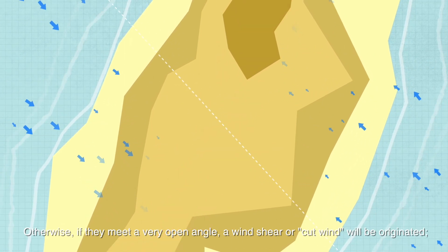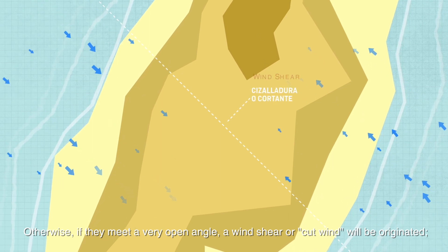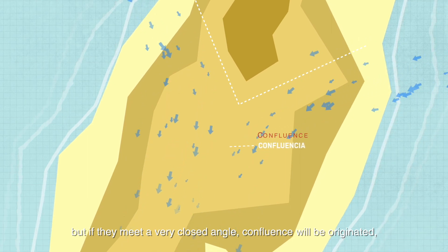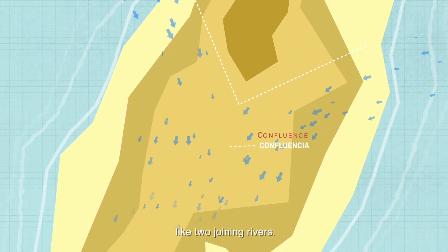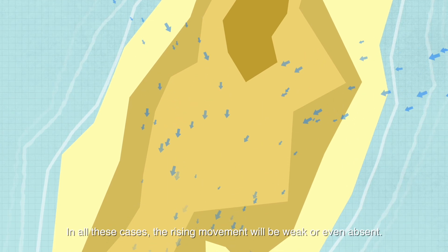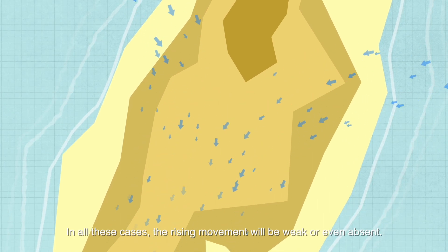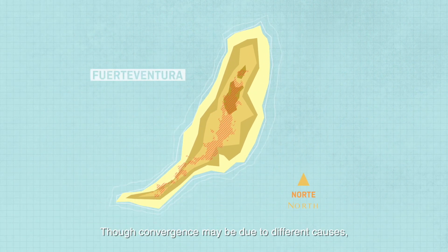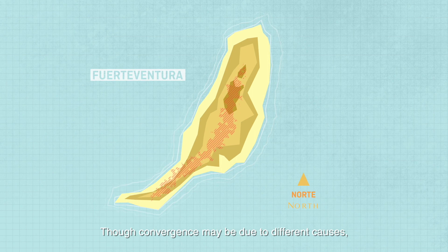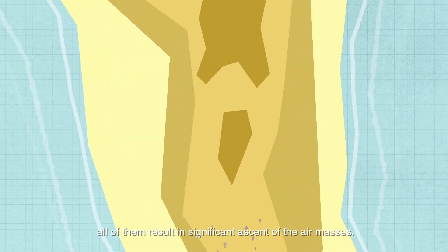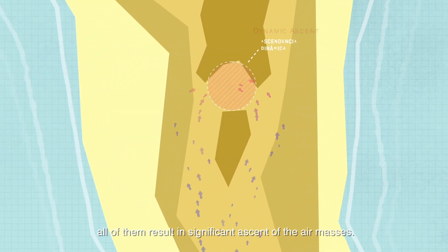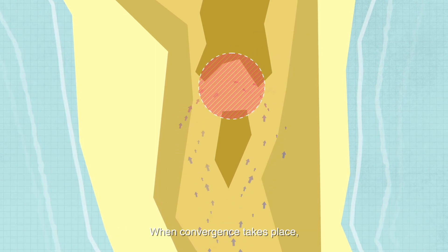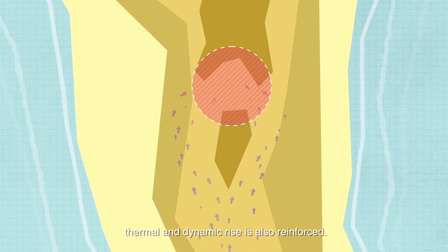Otherwise, if they meet at a very open angle, a wind shear or wind cut will be originated. If they meet at a very closed angle, confluence will start — like two adjoining rivers. In all these cases the rising movement will be weak or even absent. Though convergence may be due to different causes, all of them result in significant ascent of the air masses. When convergence takes place, thermal and dynamic rise is also reinforced.